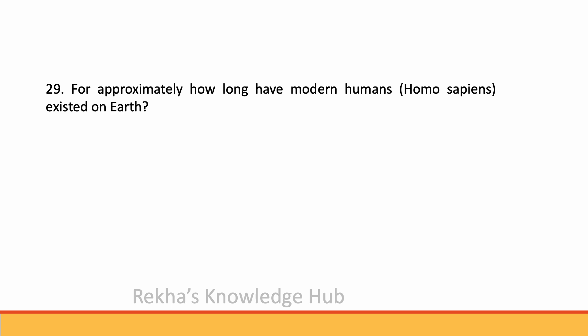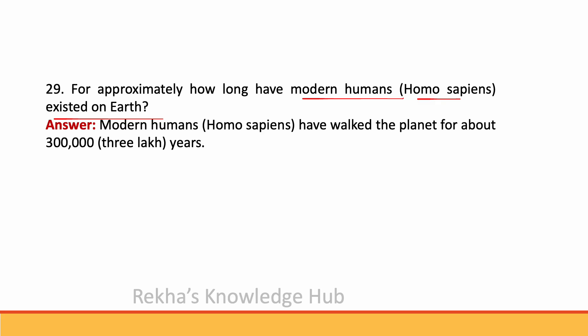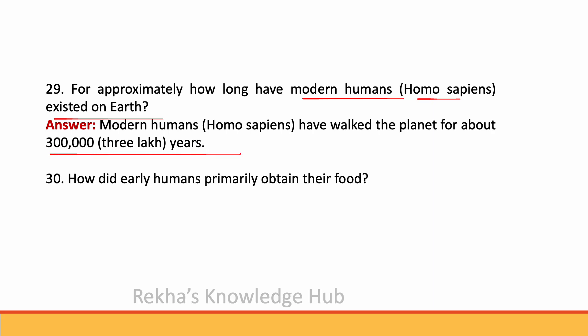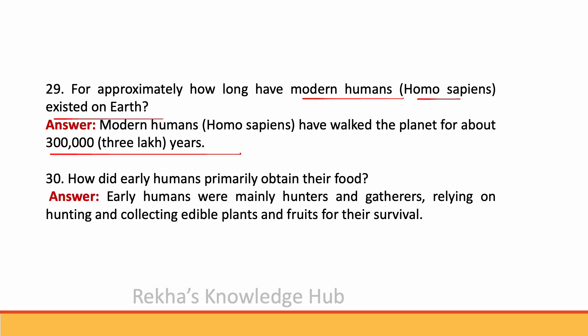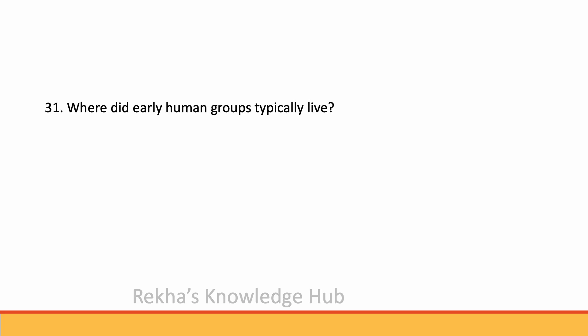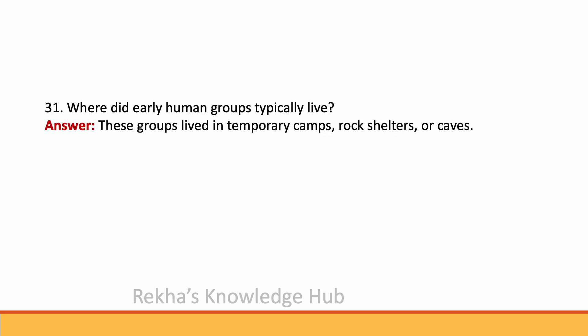For approximately how long have modern humans or Homo sapiens existed on Earth? Modern humans or Homo sapiens have walked the planet for about 3 lakh years. Early humans were mainly hunters and gatherers, relying on hunting and collecting edible plants and foods for their survival. These groups lived in temporary camps, rough shelters or caves.